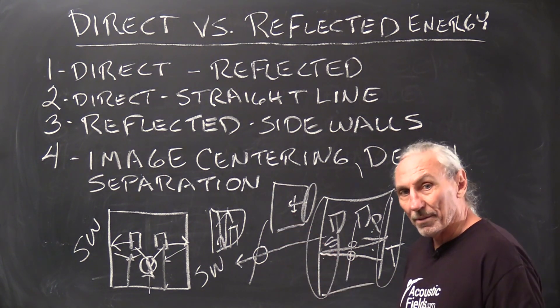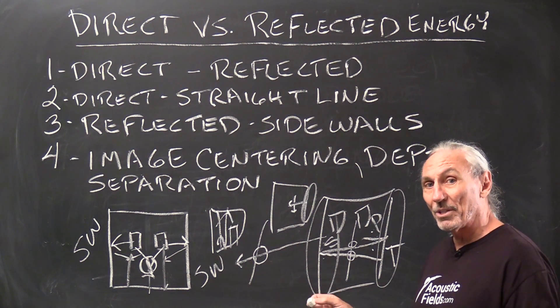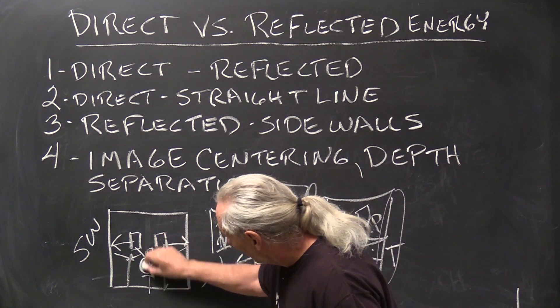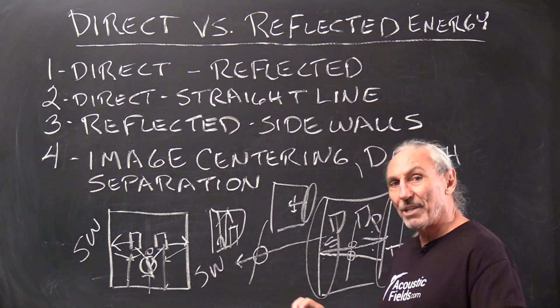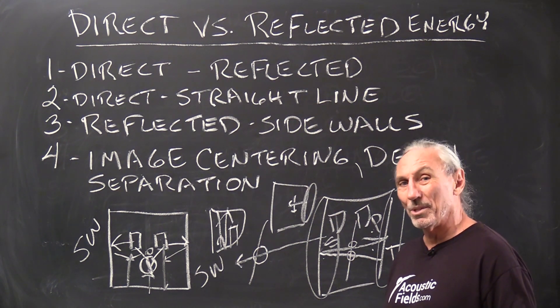Engineers sit near field and we know why they do that, because they want to take the reflections from the rooms out. They want to hear more direct. So the closer you sit to those speakers, the less room sound you're going to hear because they want to hear what's in the mix, not what's in the room.